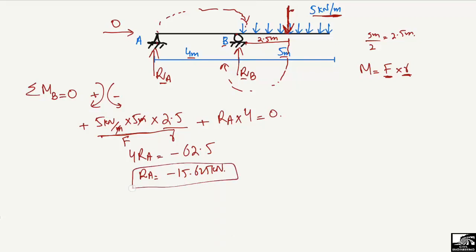We got a negative sign with the value, meaning our assumed direction was wrong. RA is now to be changed to the reverse direction — it means RA is acting in the downward direction with a magnitude of 15.625 kilonewton. A negative sign always shows that your assumption was wrong, so we change the direction from upward to downward.